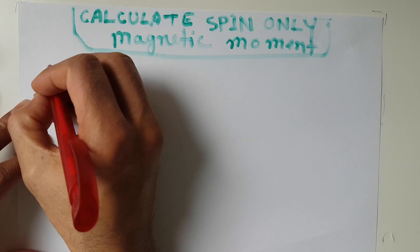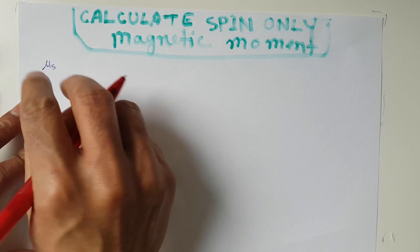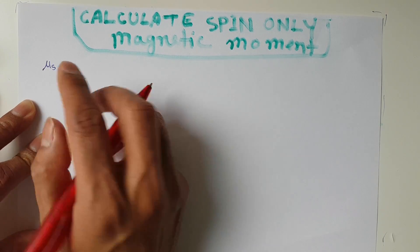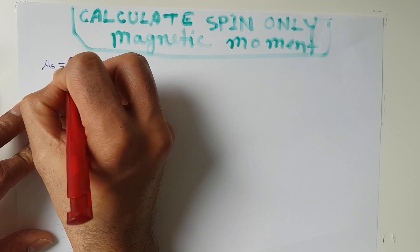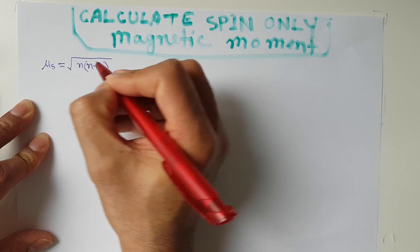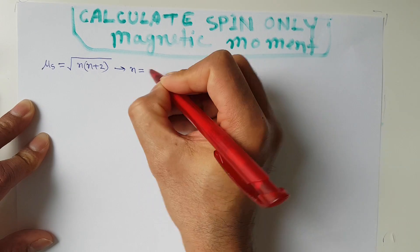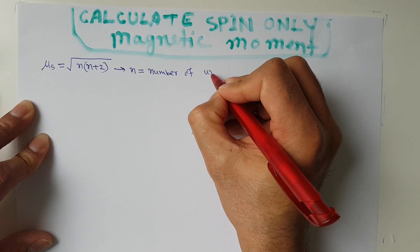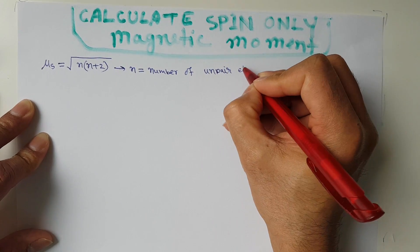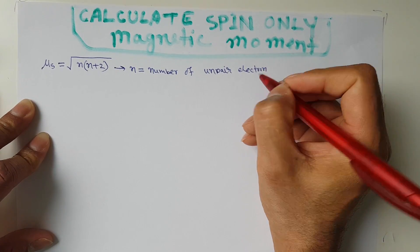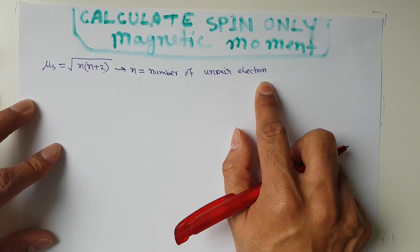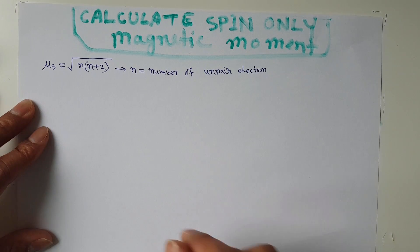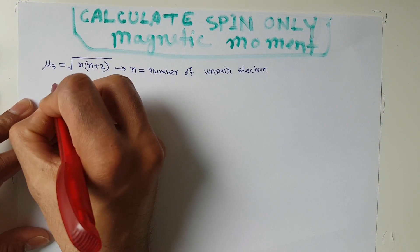To calculate the spin-only magnetic moment, there is a special formula called μs, where μ means magnetic moment and s denotes that this is the spin-only magnetic moment. The formula is μs = √(n(n+2)), where n equals the number of unpaired electrons. If you know the number of unpaired electrons of any element or ion, you can calculate the magnetic moment easily.